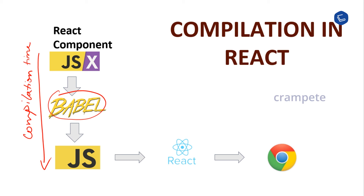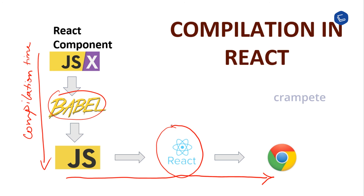All React components have a render function. The render function specifies the HTML output of a React component. JSX allows you to write HTML-like structures, such as DOM-like tree structures, in the same file where you write JavaScript code. A preprocessor will then transform these expressions into actual JavaScript code. At runtime, this plain compiled JavaScript code is loaded into the browser, where React — with the help of the virtual DOM — takes care of updating the state and gets executed. This is all about compilation in React.